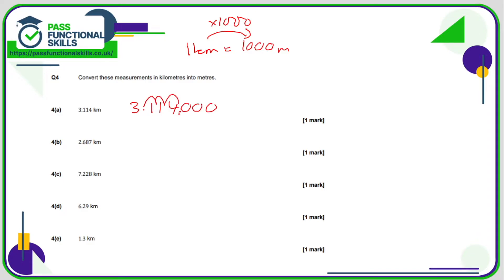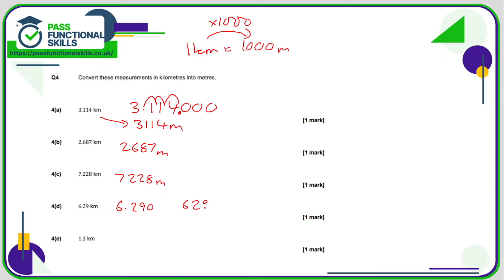Moving three positions gives us 3114 metres. So if 3.114 becomes 3114, then 2.687 becomes 2687 metres, 7228 metres. 6.29 can be written as 6.290, giving 6290 metres. 1.3 kilometres is 1.300, which is therefore 1300 metres.